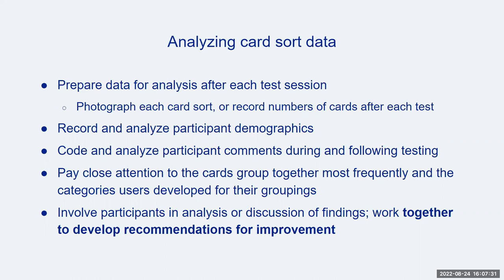If you opted to use an online tool, consult the tool's built-in analysis and reporting features. After testing is complete, you can analyze demographic information and user comments provided by participants. If you're interested in using and sharing quantitative information, analyze which cards participants group together most frequently and how often participants placed cards in specific categories. For detailed statistical analysis, you might use Excel, SPSS, or another analysis tool to show the relationships between cards across sessions. For a higher-level and less detailed review, you may simply look over your notes and records of participants' labels and card numbers to find commonalities across test sessions.